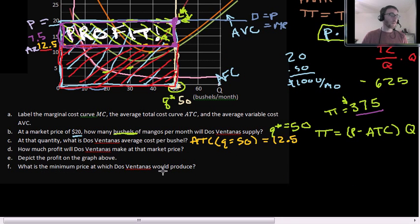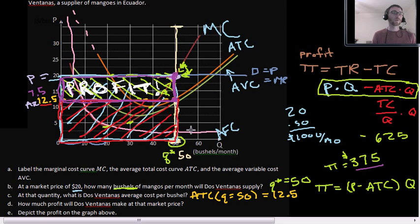Last but not least, what is the minimum price at which Dos Ventanas would produce? In your class or in a lecture, what we found was that a firm will continue to produce in the short run as long as they can cover their variable costs. So if their total revenue is greater than their variable costs, they'll stay in business. They'll shut down if their total revenue is less than their variable costs. If we divide both of these by quantity, we'll find that they'll stay in business as long as price is greater than their average variable costs.